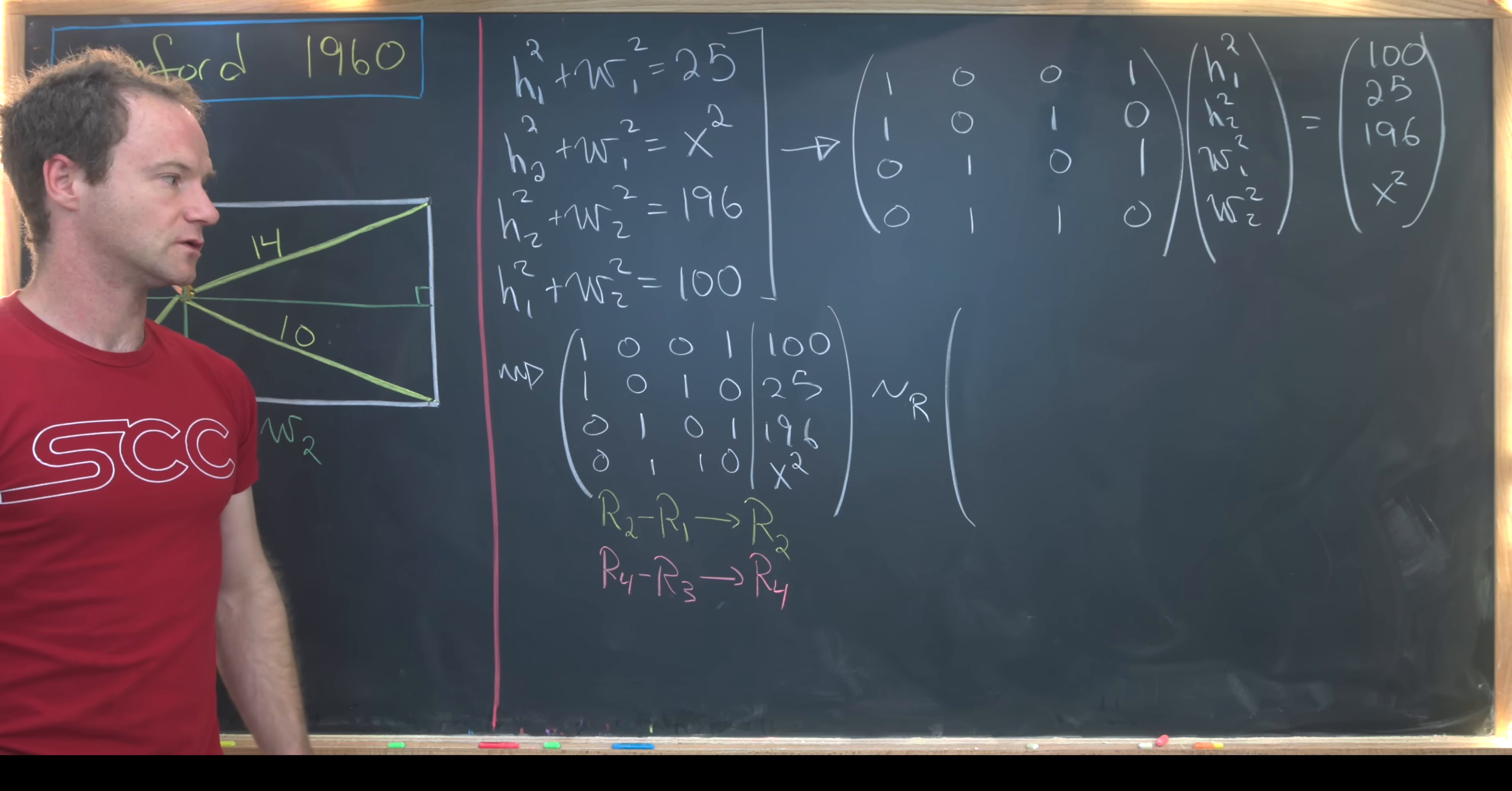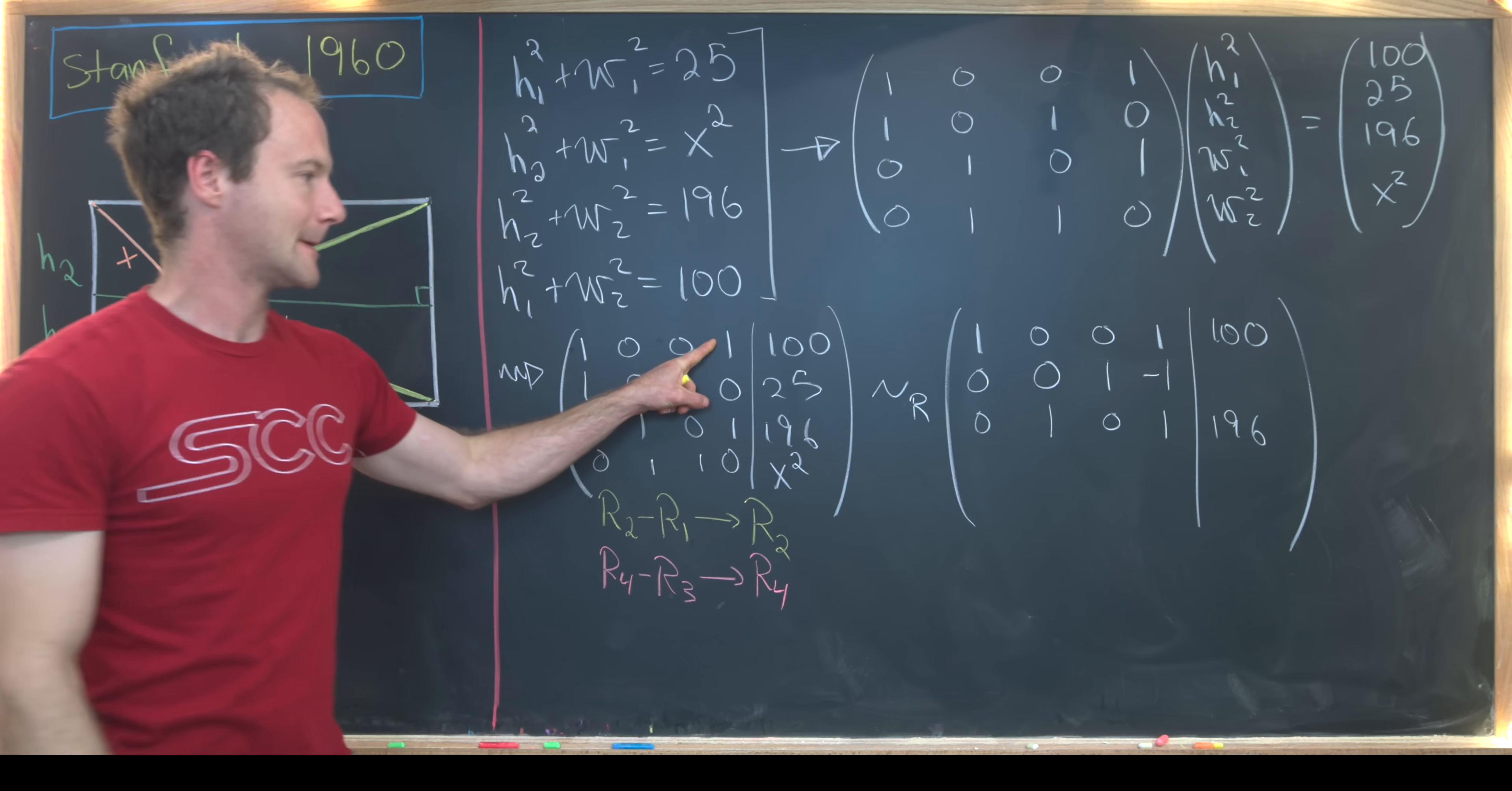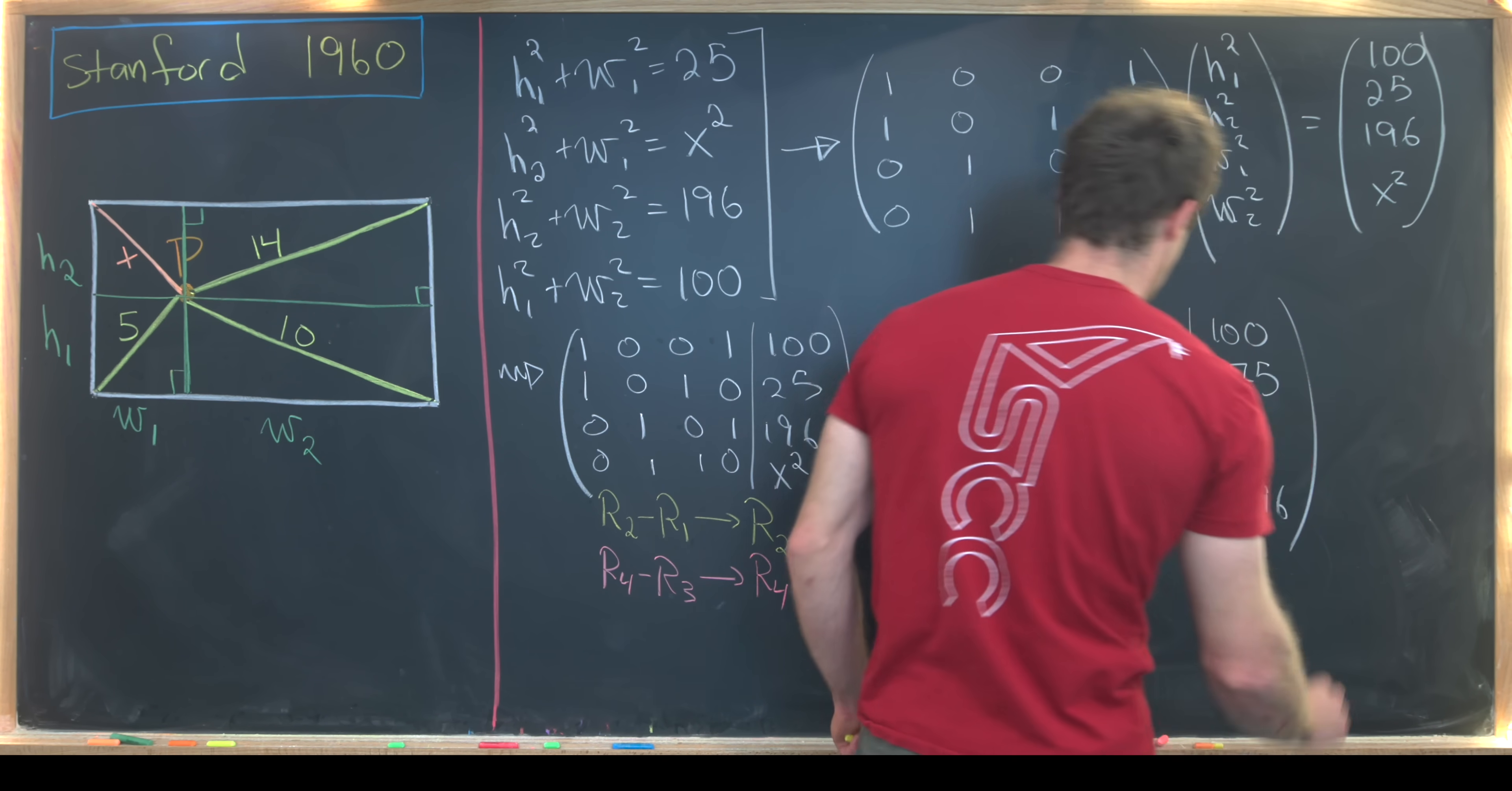Under that row operation, our augmented matrix is equivalent to the following augmented matrix. So we're using row 1 and row 3 as tools, so that means those are not changing. I'll just write those down just as they are. [1,0,0,1|100] and then [0,1,0,1|196]. Then let's see how row 2 changes. We've got 1 minus 1, which is 0. 0 minus 0, which is 0. 1 minus 0, which is 1. 0 minus 1, which is negative 1. And then here we have 25 minus 100, which is minus 75. Then let's see what we get for row 4. So [0,0,1,-1|x²-196].